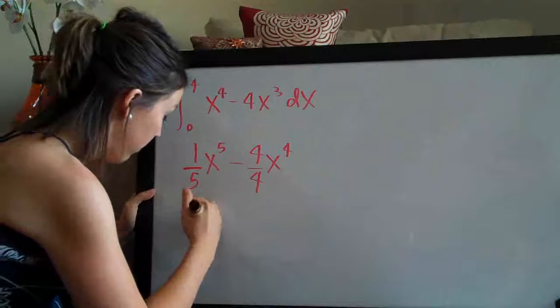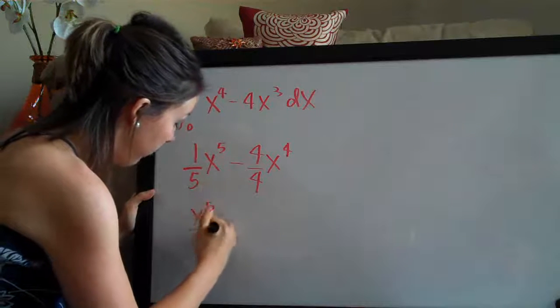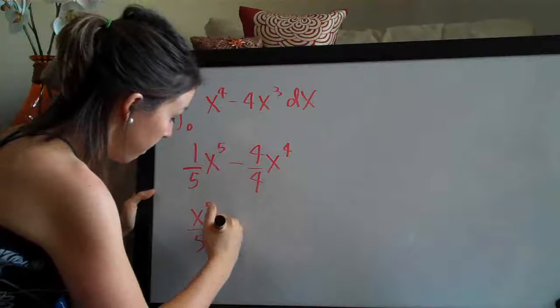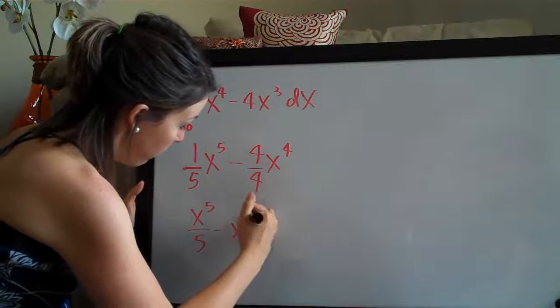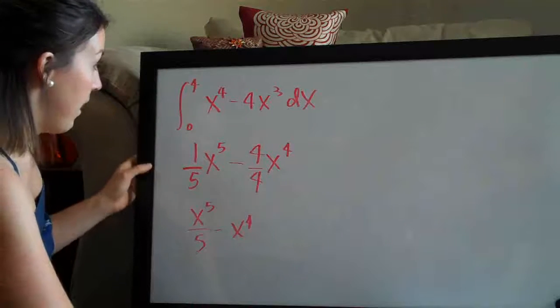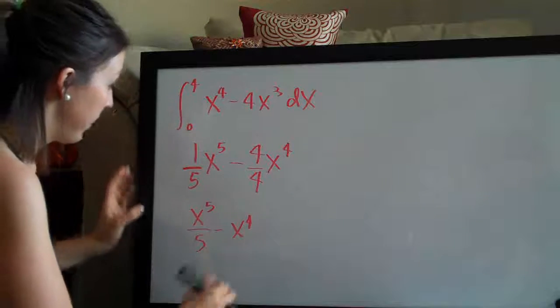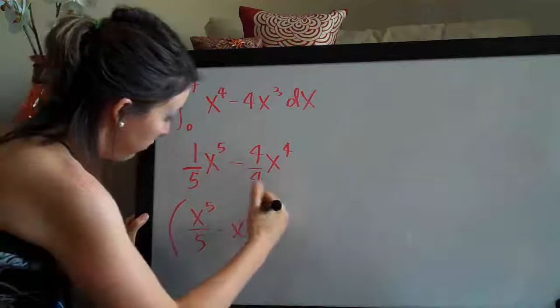Let's go ahead and simplify this. I'm going to write it as x to the five over five minus x to the four. So now we need to evaluate on the range zero to four.